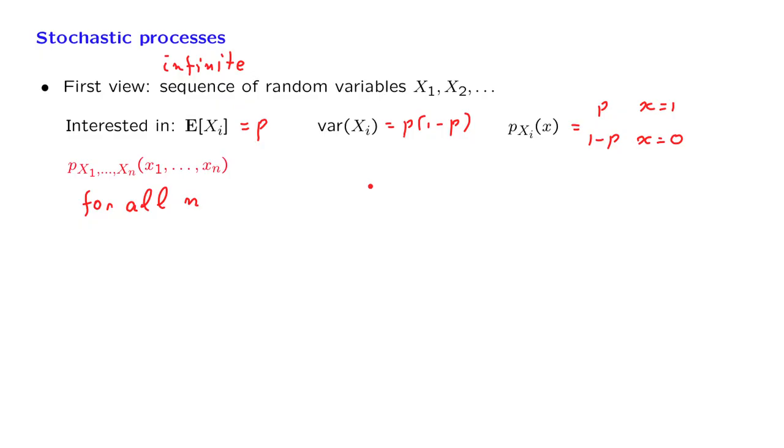For the case of the Bernoulli process, we have specified this joint PMF in an indirect way. Because we have said that the random variables are independent of each other, so the joint factors as a product of the marginals.